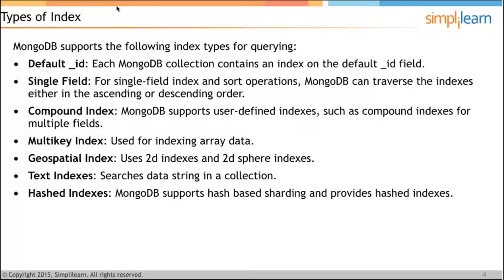Then we have compound indexes. MongoDB supports user-defined indexes such as compound indexes for multiple fields. If we want to put a compound index on the name and the age together, we put a compound index on both. We have the option to make the name index sort in ascending order and the age index sort in descending order.